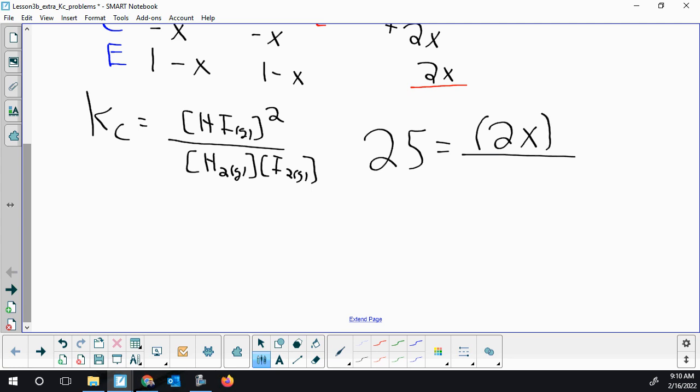You have to be careful - I'm not done. We still have the square part, so I'm going to bracket that concentration and make sure I square my 2x. My denominator is 1 minus x, which would be my hydrogen concentration, but my iodine concentration is also 1 minus x, so I'm not going to write it out twice - I'm going to square it.